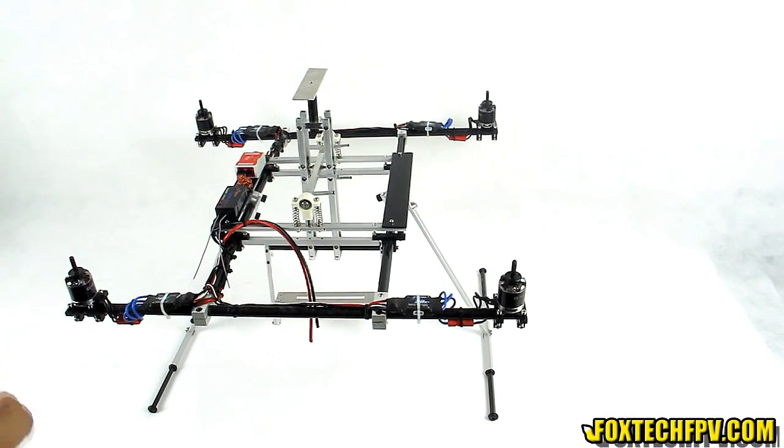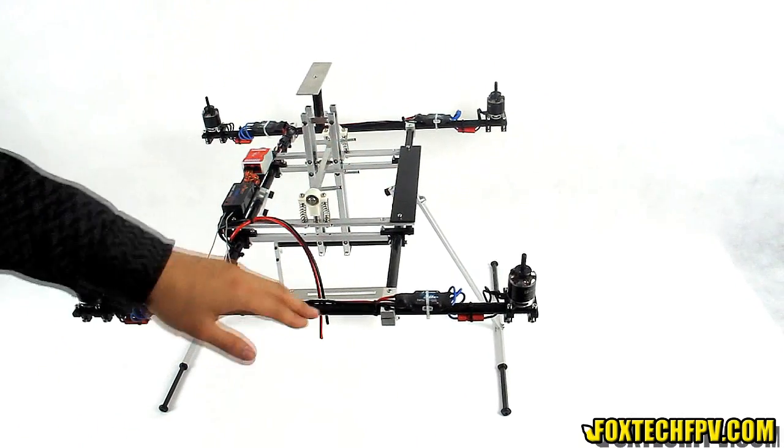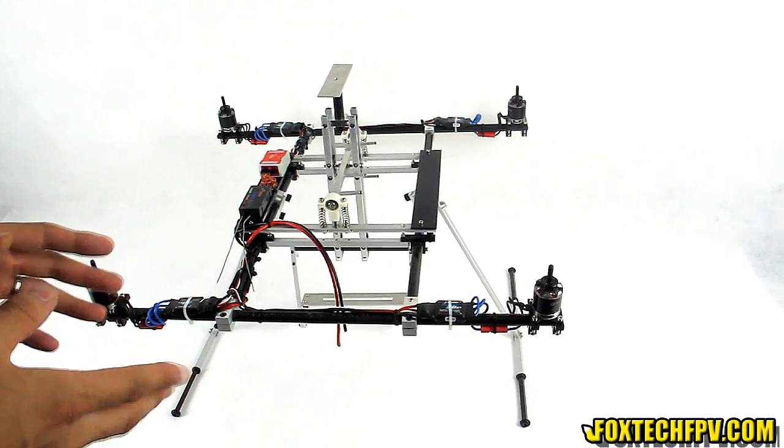You can see the Glider 600 has a very special aluminum and carbon fiber material structure, and this makes this frame very special and very nice looking.